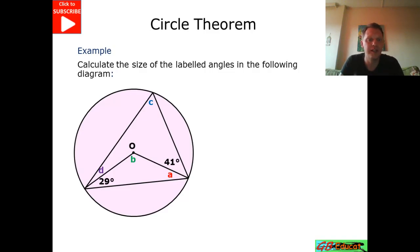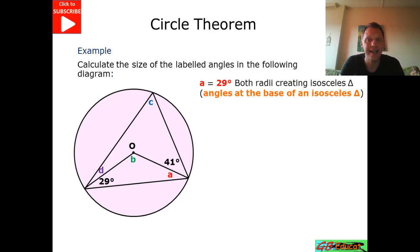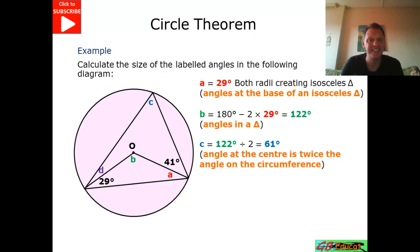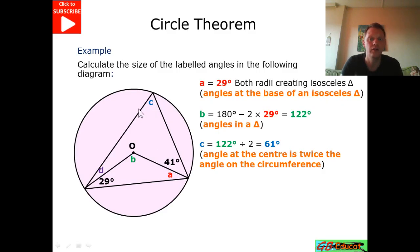A different problem. To calculate A, I've used the idea of an isosceles triangle — angles at the base of an isosceles — so this will be 29. For B, I've taken these away from 180 to give me 122. For C, angles at the centre are twice that of the circumference, so I've halved 122, leaving me with 61 for angle C.